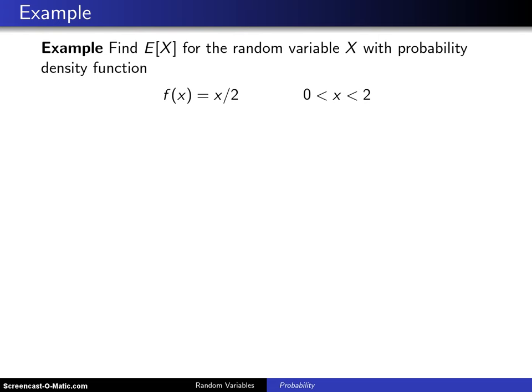This one involves a continuous random variable, so we will be working an integral rather than computing a summation. Find the expected value of x for the random variable x with probability density function f of x equals x over 2 for x values between 0 and 2.